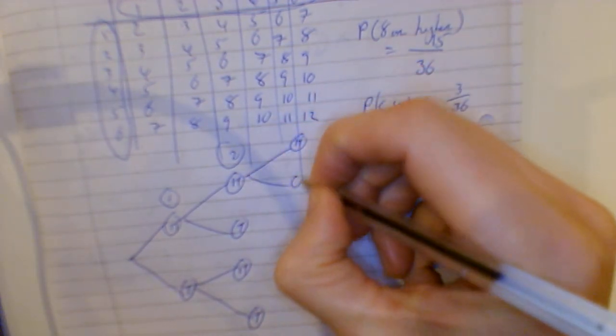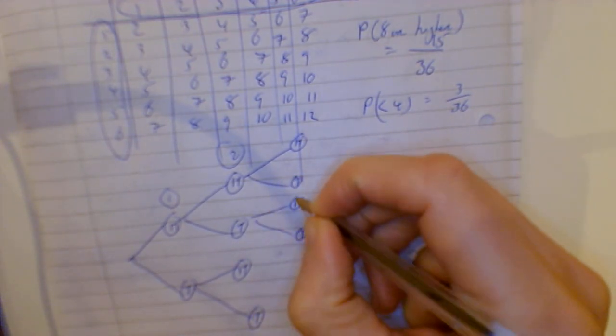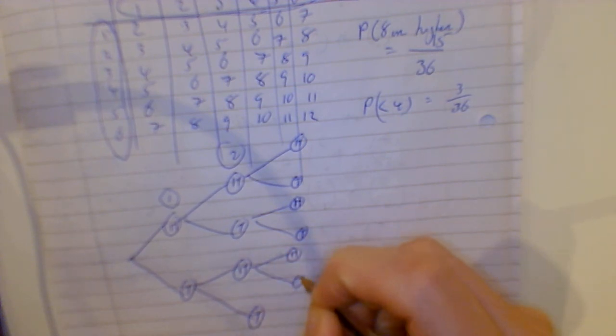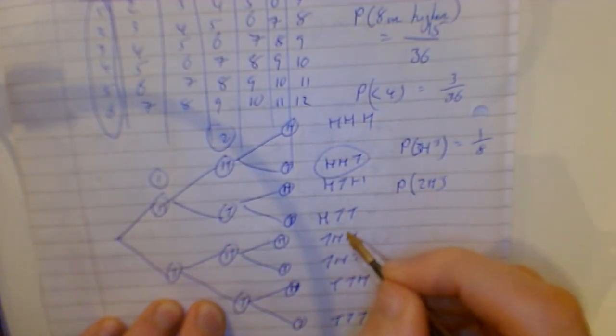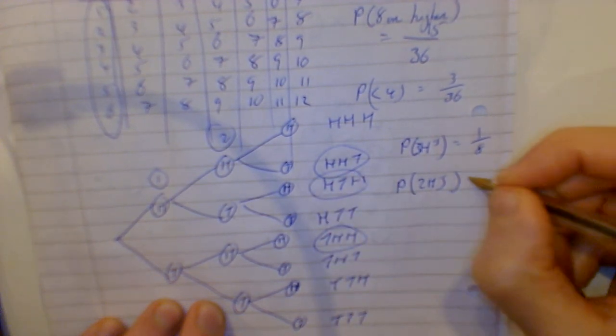Third time: heads, tails, heads, tails. So with this, we'll go heads, heads, heads. And that is 3 out of 8.